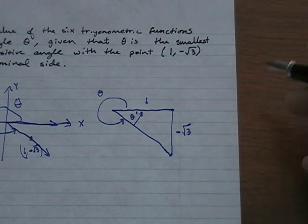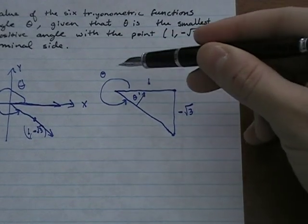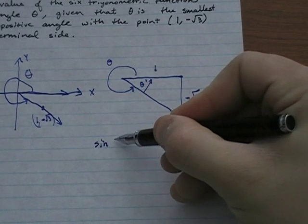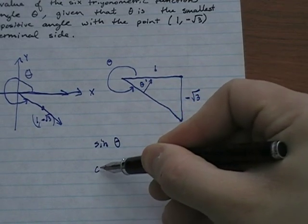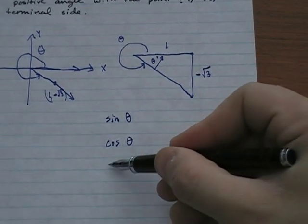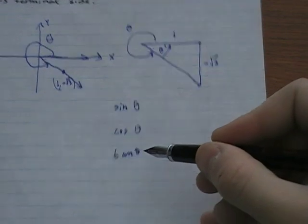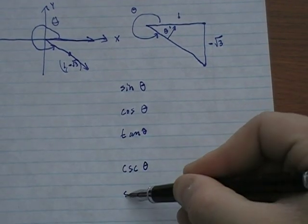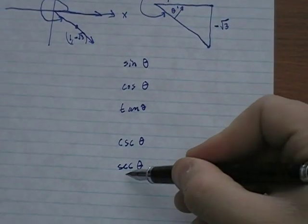So the sine of theta prime will equal the sine of theta — same for cosine, tangent, cosecant, secant, and cotangent. You can verify this on a calculator, and I'll show you that in just a moment.